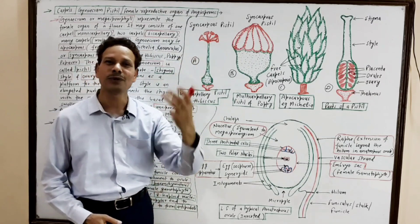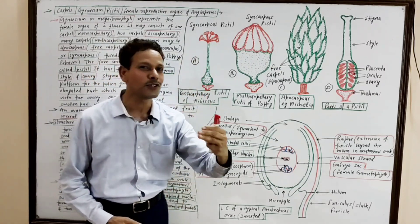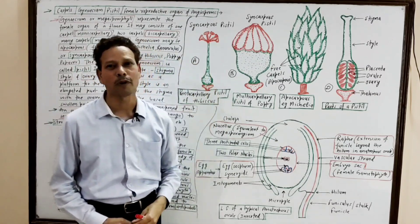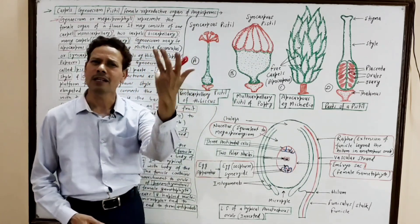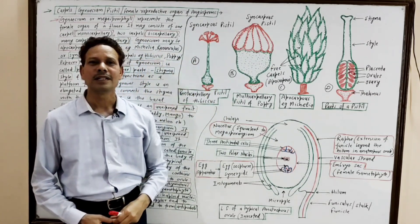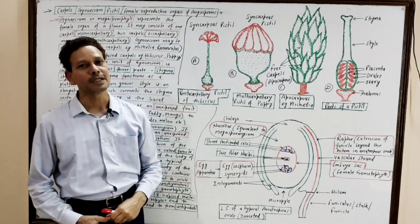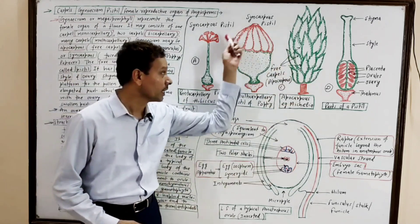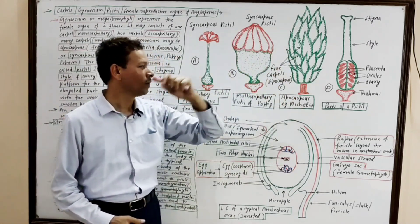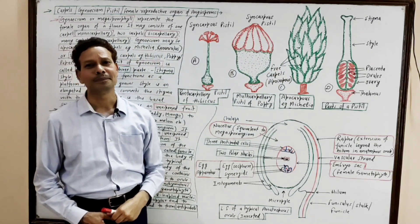The gynoecium, the megasporophyll, may consist of several carpels. Then the condition is multicarpellary.